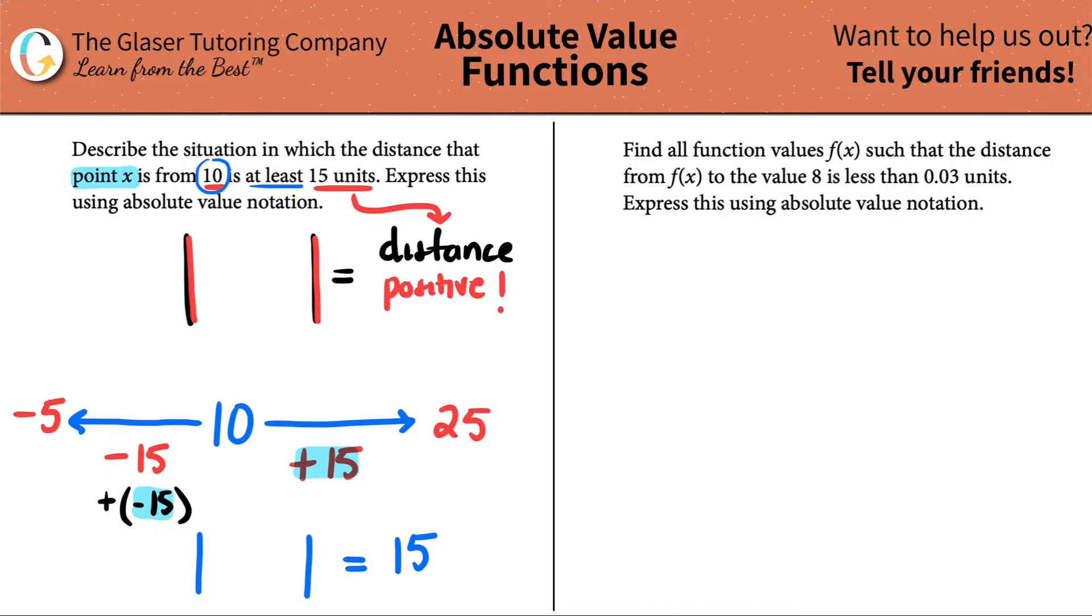What is the starting point? The starting point is 10. So 10 has to be in the absolute value brackets per se. And we want to express that it's x from 10. So they're telling us that we need to use this variable x. But we already know the two numbers, right? Or at least two numbers. We know that x could be negative 5 and x could be 25.